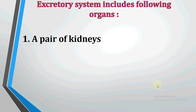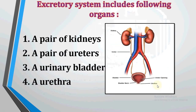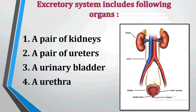The main parts of the excretory system are: first, a pair of kidneys; second, a pair of ureters; third, the urinary bladder; and fourth, the urethra. Looking at the diagram of the excretory system, we can see the pair of kidneys, the pipe-like ureter structures, and the urinary bladder.